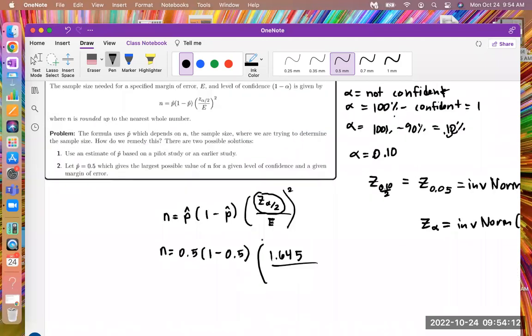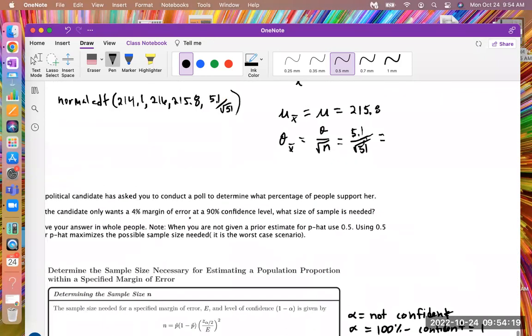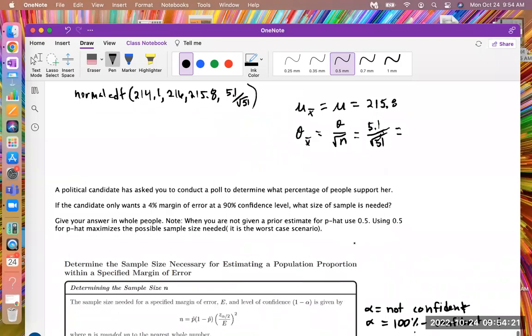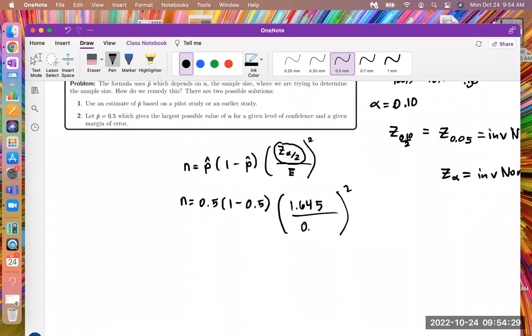So I'm going to plug in for Z alpha over two, I'm plugging in 1.645 because that's the value that I got from the Z 0.05. And then the E that I have to plug in right here is the margin of error. And that they said is 4%. I just write 4% as a decimal. So I moved the decimal twice to the left, so it's 0.04. So that's what I plug in for the E.